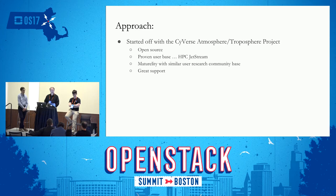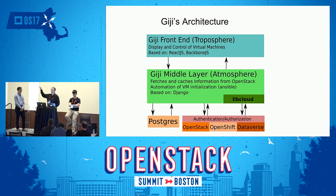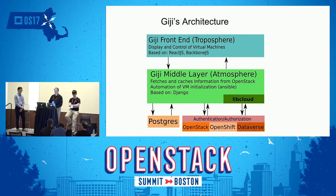We chose Atmosphere-Troposphere because it provides a similar user experience that we wish to provide to our users, it is open source, and it has a similar user base and some maturity. The architecture has a front end — the Troposphere project — and a middle layer — the Atmosphere project. I will discuss this in more detail after an introduction to Cyverse-Atmosphere-Troposphere by its lead developer, Steve Gregory.